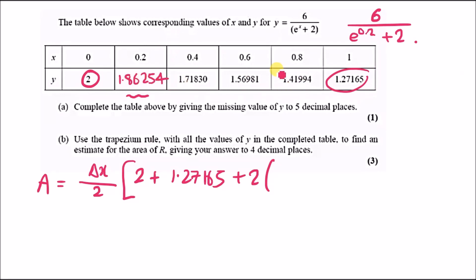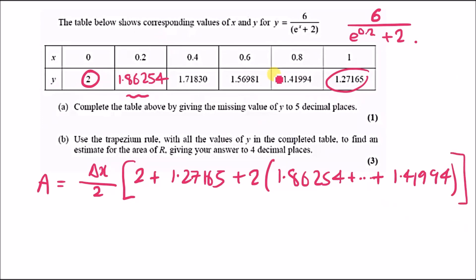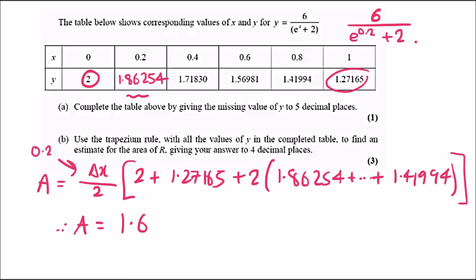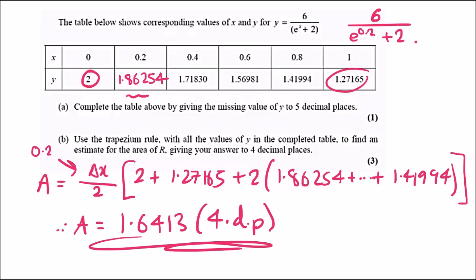Then we add two times each of the four intermediate y-values: 1.86254, and the others including 1.41994. The step size delta x is 0.2, so we use 0.2 over 2 outside the bracket. Entering everything into the calculator gives a final estimated area to four decimal places of 1.6413.